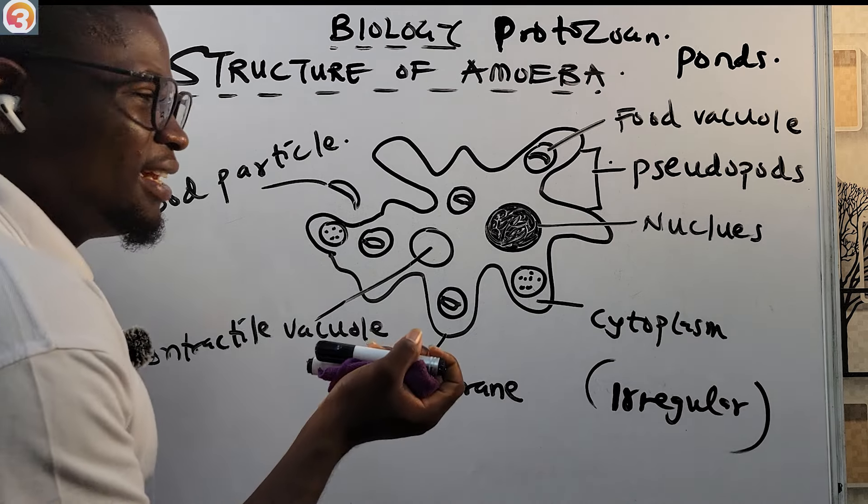To summarize: amoeba is a protozoan mostly found in ponds. It is a unicellular organism with an irregular shape. That covers the structure of amoeba. Now let's answer some questions to cement our understanding of this topic.